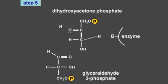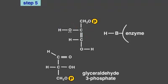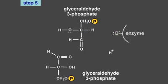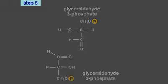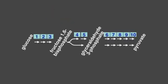In step five of glycolysis, the enzyme triose-phosphate isomerase catalyzes the isomerization of dihydroxyacetone phosphate into glyceraldehyde-3-phosphate. The catalytic mechanism of this enzyme is very similar to that of phosphoglucose isomerase back in step two. The result is two molecules of glyceraldehyde-3-phosphate. All of the subsequent steps of glycolysis will occur twice, once for each molecule of glyceraldehyde-3-phosphate. These are the energy generation steps of glycolysis.